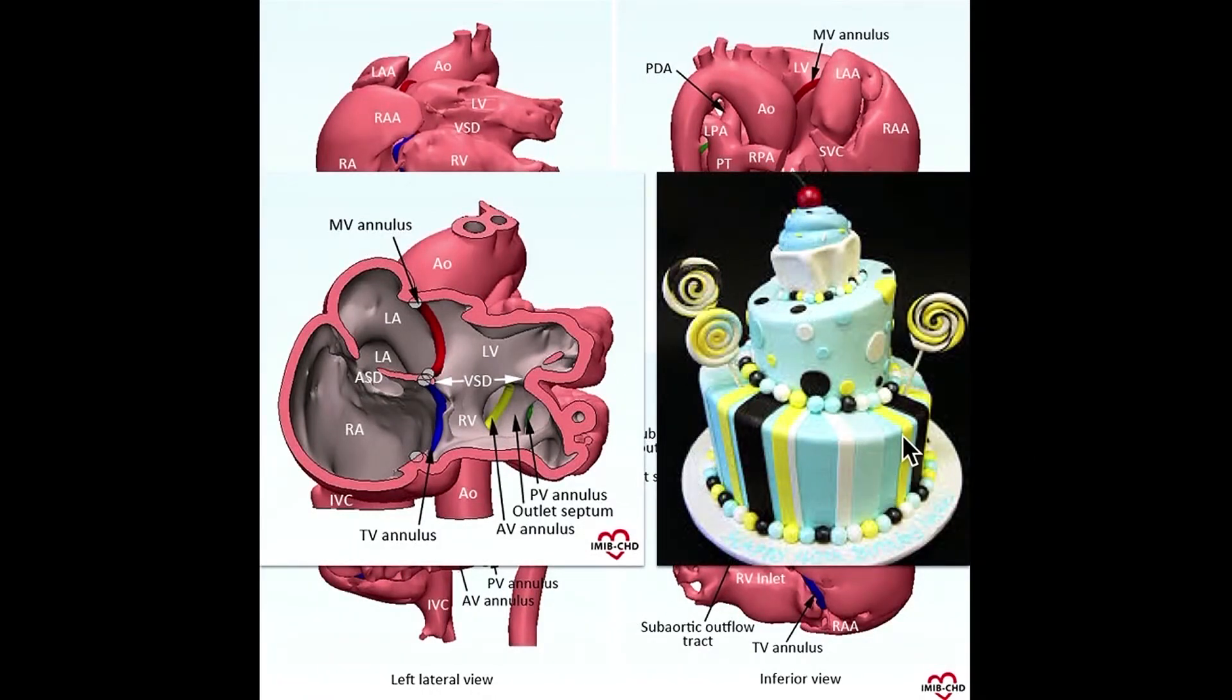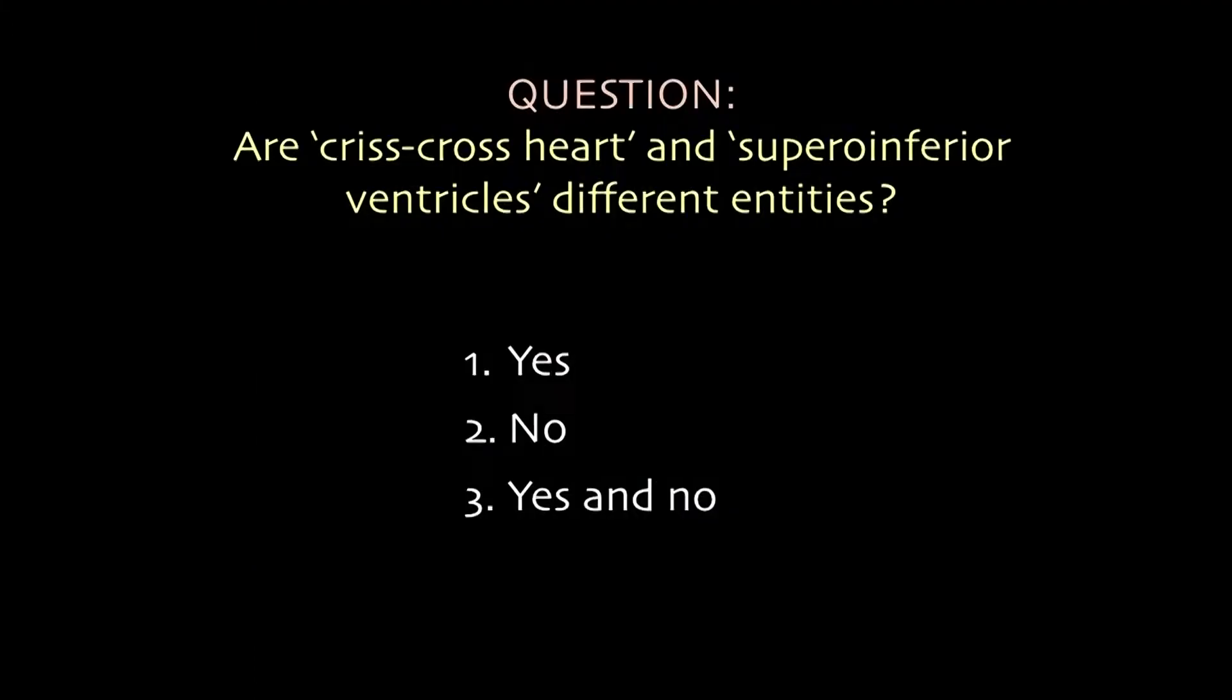I did not know what the Topsy-Turvy heart is. And then what it means is that cakes are stacked on top of each other. That is Topsy-Turvy cake. So that is how this name came from. So first question is that are criss-cross hearts and superior and inferior ventricles different entities? Yes, no, yes and no. So have your answer in your mind.